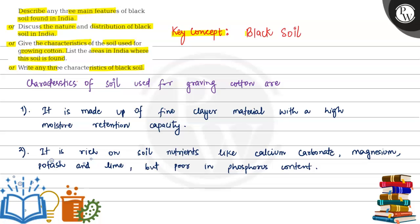So, the key concept of the question is black soil. The characteristics of the soil used for growing cotton are as follows.